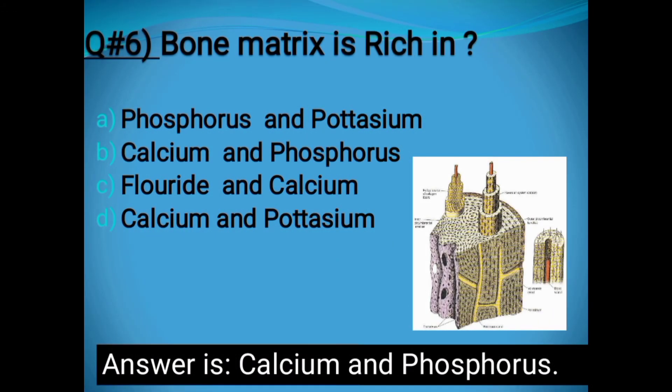Question number six: Bone matrix is rich in which minerals? Options: Phosphorus and Potassium, Calcium and Phosphorus, Chloride and Calcium, or Calcium and Potassium. The correct answer is Calcium and Phosphorus — bone matrix is rich in calcium and phosphorus.